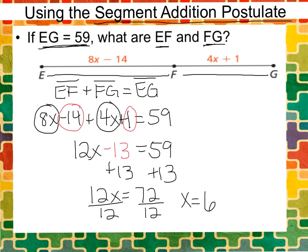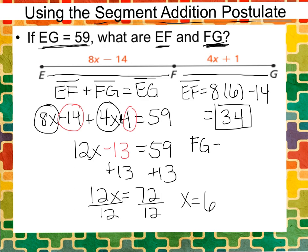Now to solve our problem, let's look back at the directions. It asked for EF and it asked for FG. So I have a variable but I need to find out the length of each segment. EF will equal 8 multiplied by 6 minus 14. 8 times 6 is 48 and we're going to subtract 14, so EF is 34. Now let's find FG. We've got to plug in the X value again and we're going to add 1. So 4 times 6 is 24 plus 1 is 25. So FG is equal to 25.